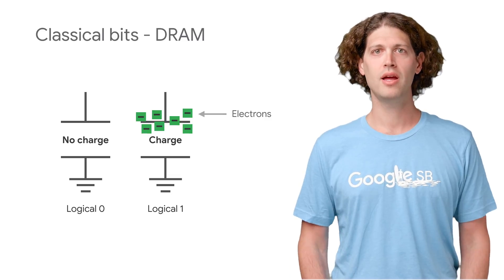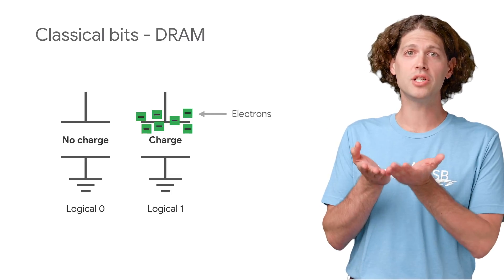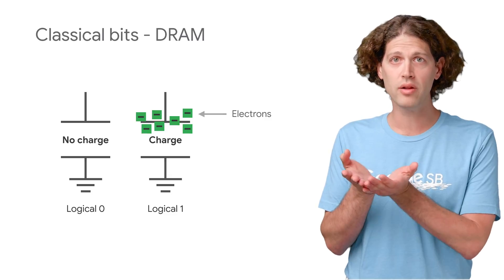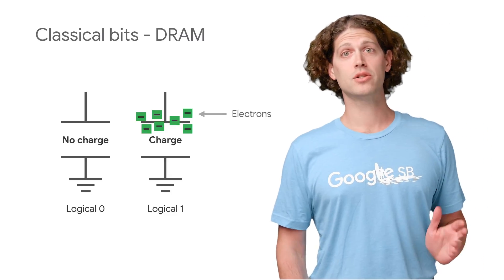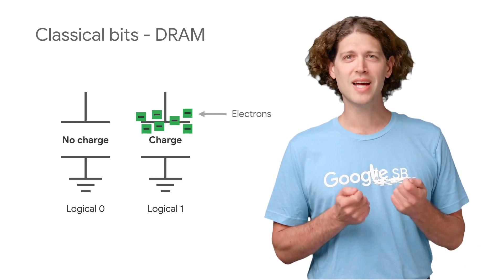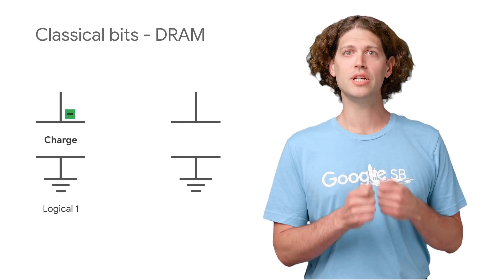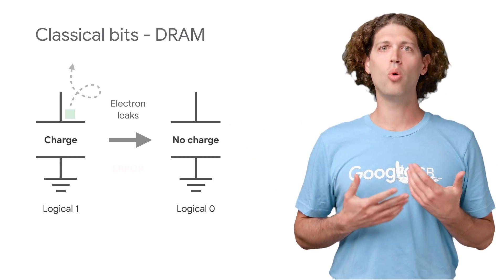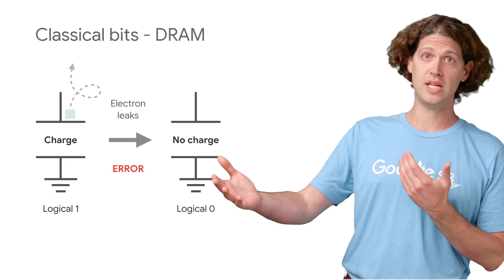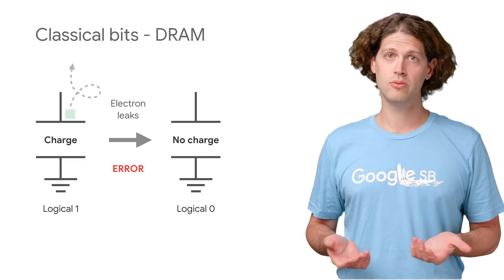Our logical zero and one are actually made up of the presence or absence of 300,000 electrons. Why use so many? In principle, we could just use the presence or absence of one electron as our logical bit. Well, physical bits are noisy. Electrons are tiny and light, so they jiggle around and leak out of the DRAM. If we had only one electron and it were to leak out, our bit would change value, which is an error.